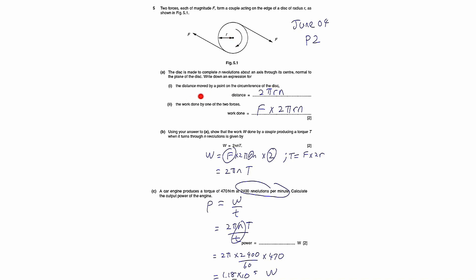Write down the expression for the distance moved by a point on the circumference of the disc. If you take a point, one revolution will be traveling a distance of 2πr, which is the circumference.